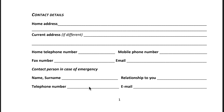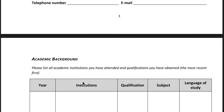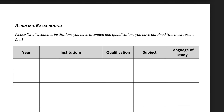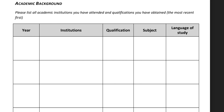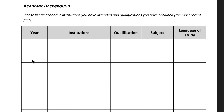Next is the contact person in case of emergency. Give the information of a person who is close to you — in case of emergency the university will contact that person. You can give the name of your father, mother, or brother. Next is academic background: please list all academic institutions you have attended and qualifications you have obtained, most recent first. For example, if your last degree is master's, give that information first, then bachelor's, then secondary education. Write the year of completion, institution, qualification, subject, and language of study.